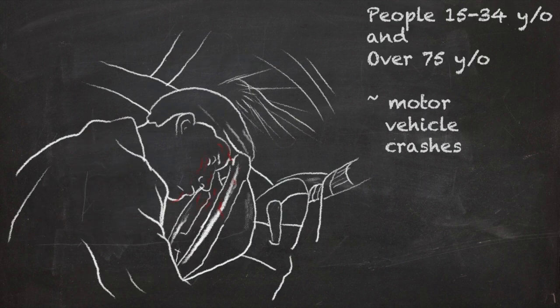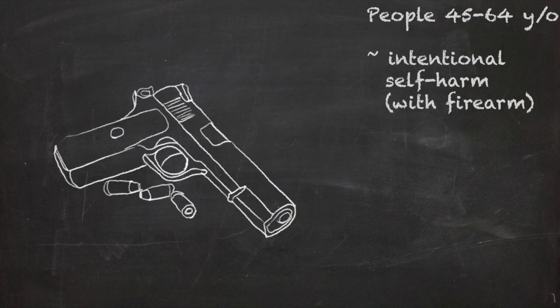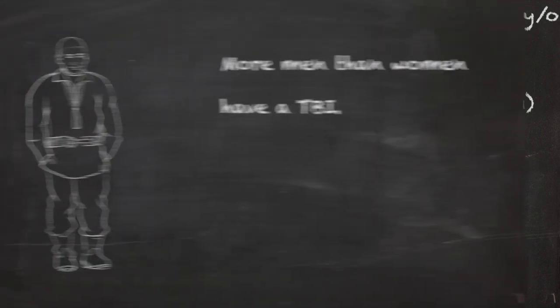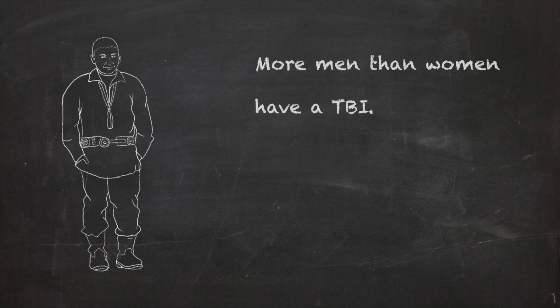Motor vehicle crashes are the main cause for people aged 15 to 34 years old and people over 75 years old. Intentional self-harm, usually with a firearm, is the main cause of TBI for people aged 45 to 64 years. More men than women have TBI.